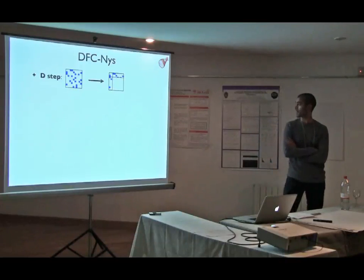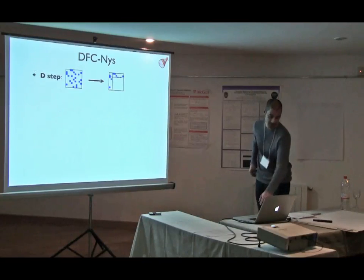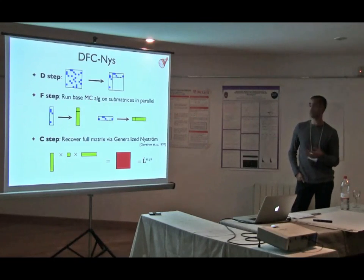Okay. So, the first algorithm, what you do here is you take the full matrix and you sample a subset of the rows and the subset of the columns. And then in the factor step, in parallel, you run the matrix completion algorithm to get the, to complete the rows and the columns of the matrix. And finally, in a combined step,